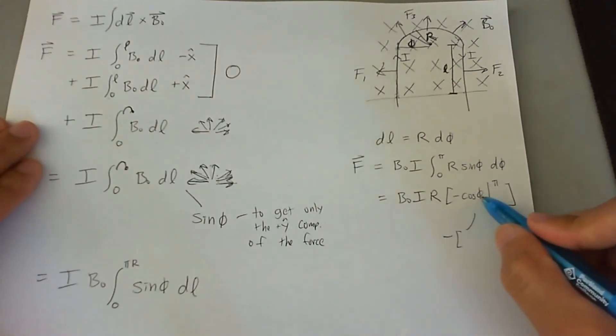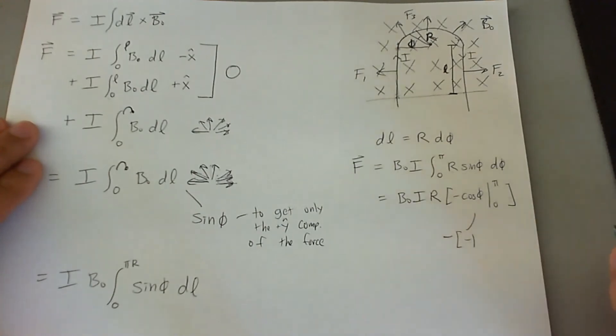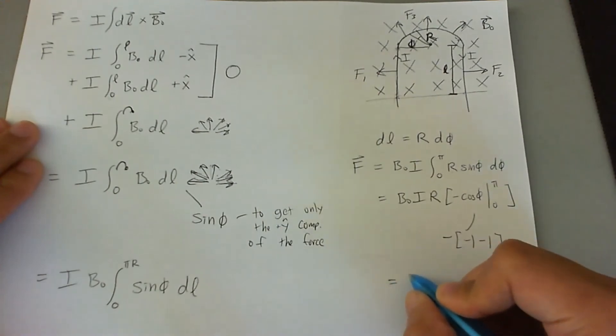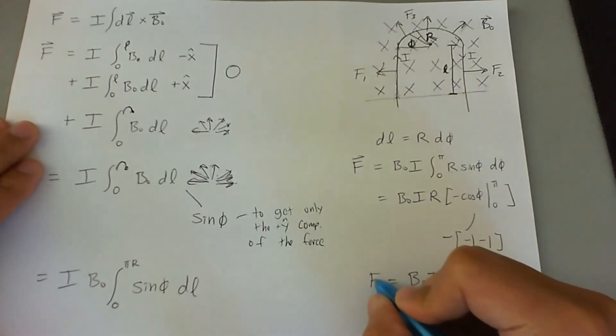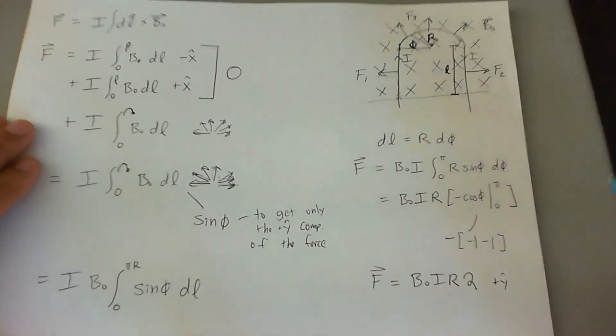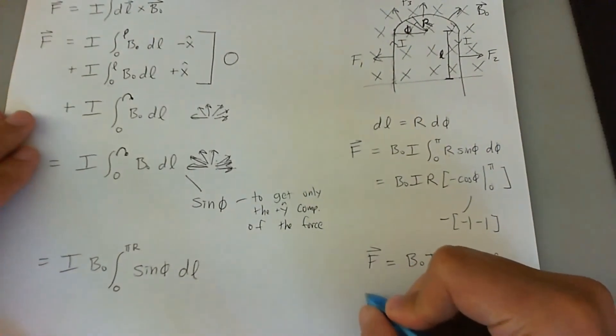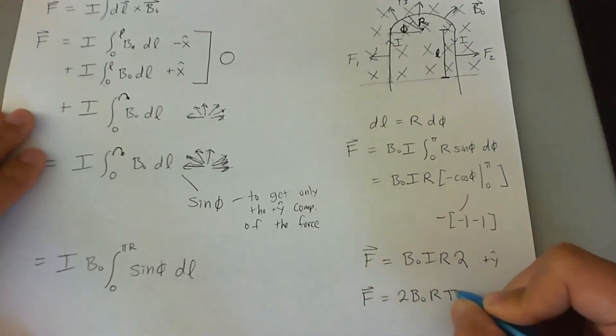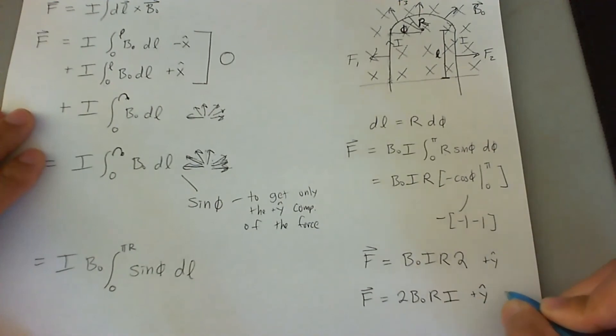A negative of a negative two is a positive two. So the force here then ends up being B naught I r times two. And the direction it goes, it's going to be in the positive y direction. And you've analyzed that just on your own without having to use the math. Let's go ahead and write it a little nicer. F is 2 B naught r I in the positive y direction.